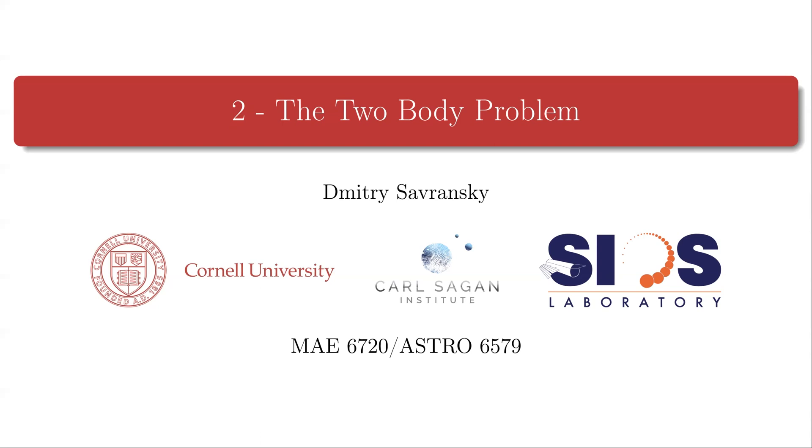It turns out that a lot of long-term stable systems, including for example the solar system, behave like collections of two-body orbits that are being very, very gently modified in time.